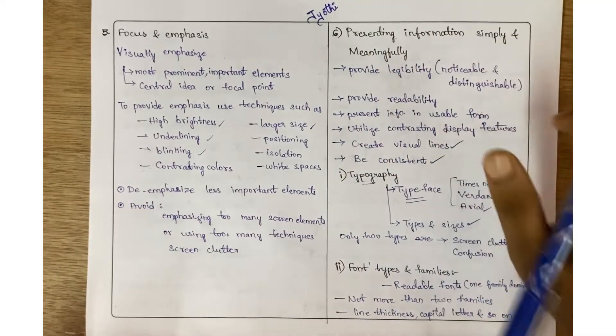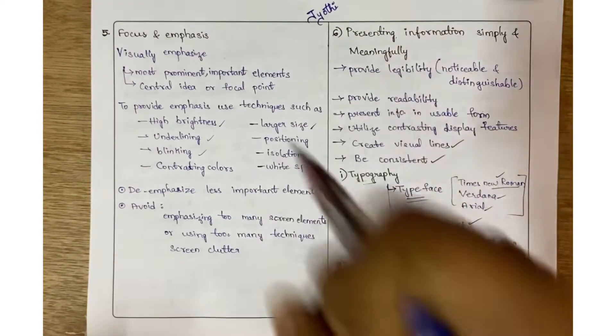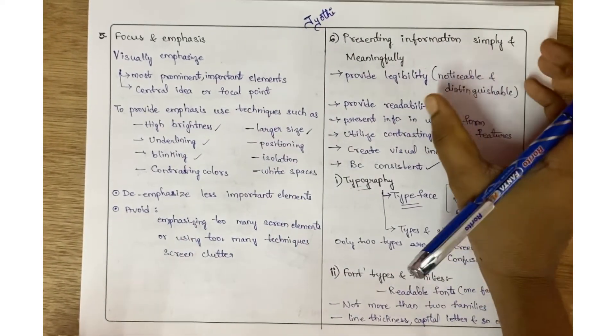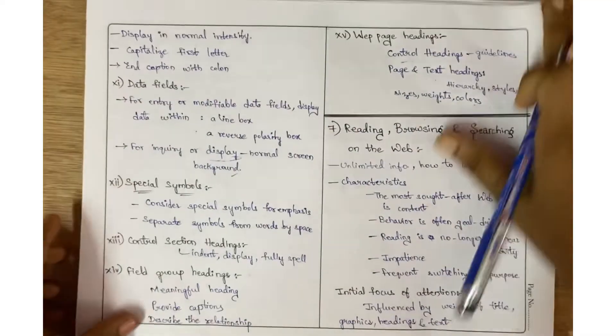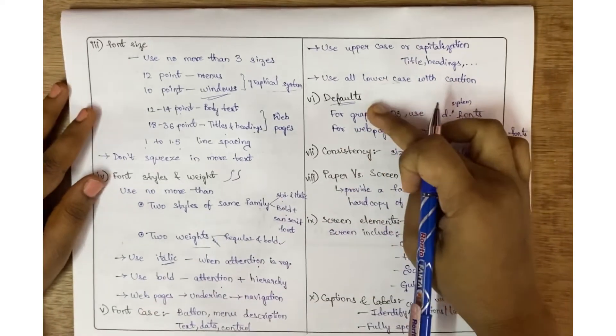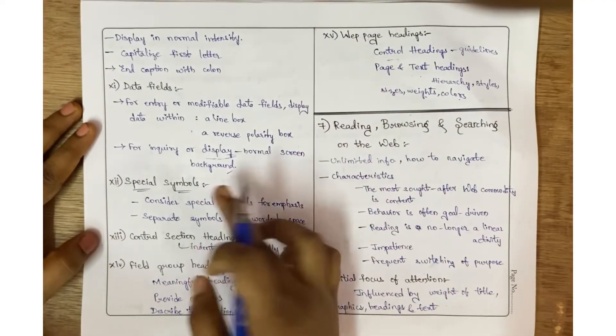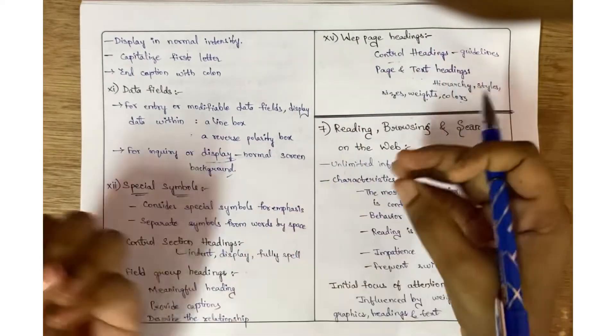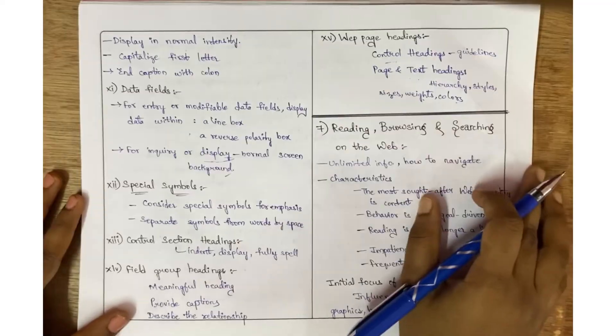In this video I have explained only two parameters. The fifth one is focus and emphasis, how to bring users' attention towards the screen. The other one is presenting information simply and meaningfully, which includes typography, font size, font styles and weights, font case, defaults, consistency, screen reading, screen elements, data fields, special symbols, control section headings, field group headings, and web page headings. I have provided here 15 points—whatever you remember you can write. If it's given for eight marks, write as many as required. Thank you.